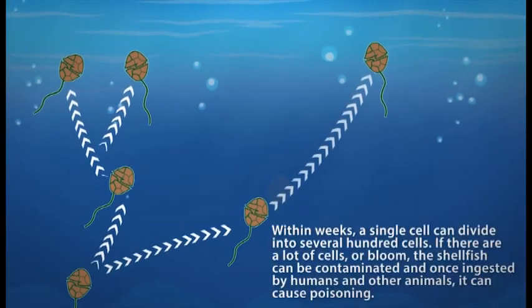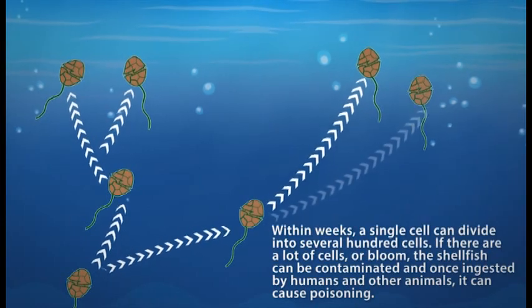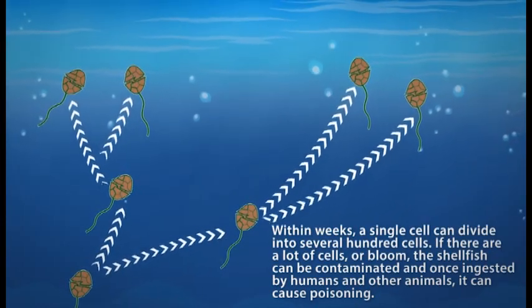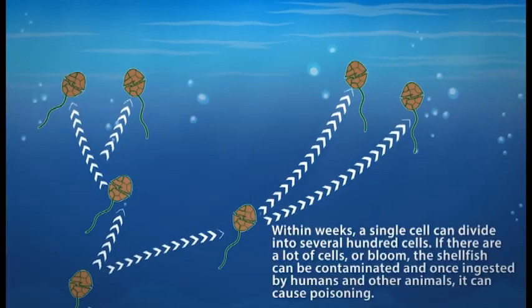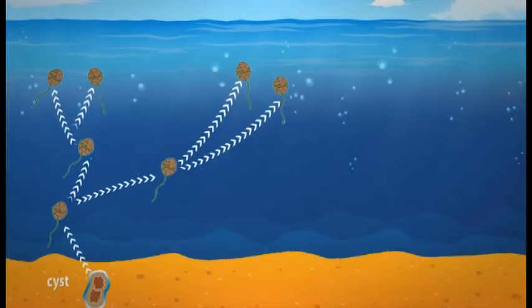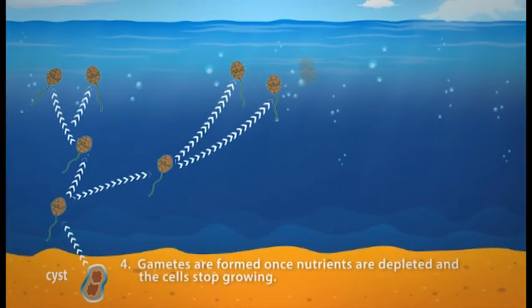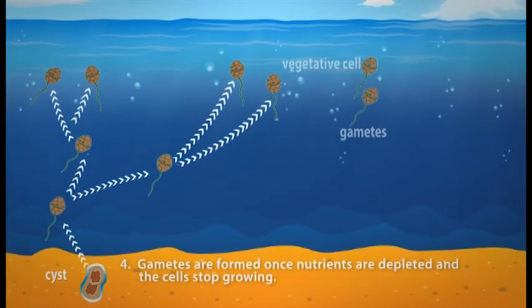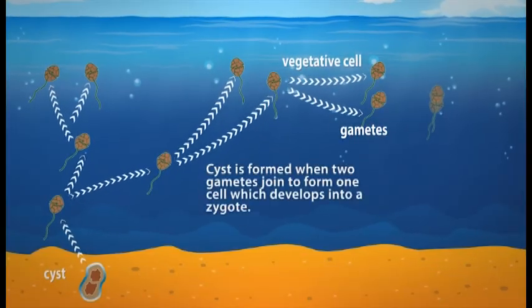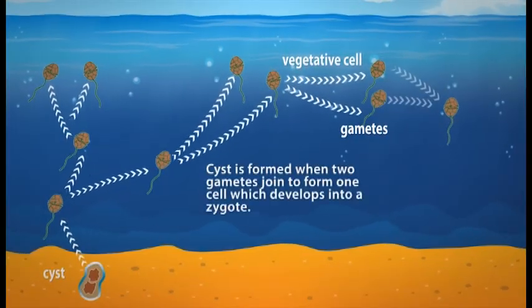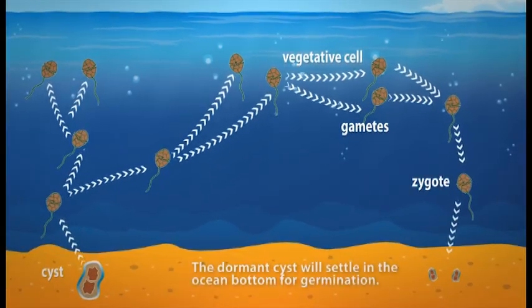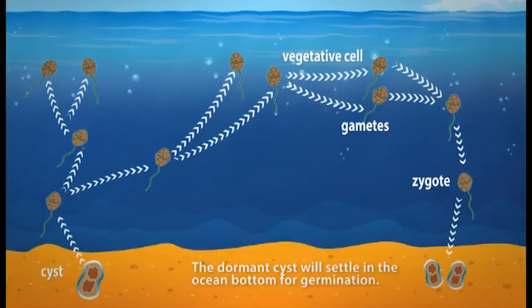If there are a lot of cells, or a bloom, shellfish can be contaminated, and once ingested by humans and other animals, it can cause poisoning. Step 4: Gametes are formed once nutrients are depleted and the cells stop growing. A cyst is formed when two gametes join to form one cell, which develops into a zygote. The dormant cyst will then settle on the ocean bottom for germination.